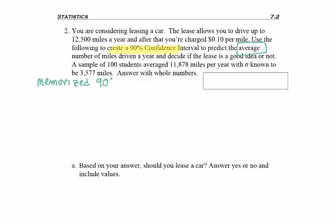So first thing is with a 90% confidence interval, maybe we've memorized z alpha over 2 is 1.645. If not we would need to go find that by hand.